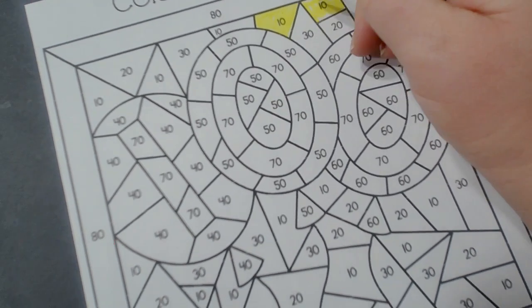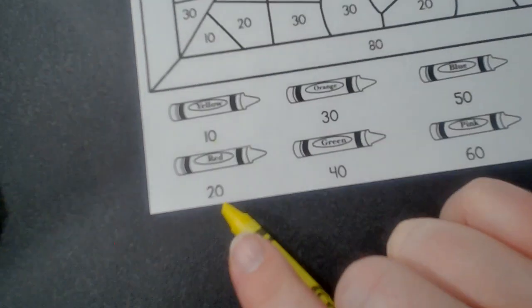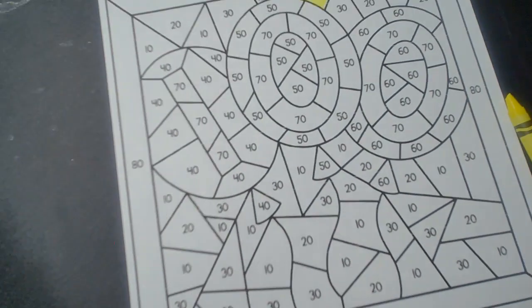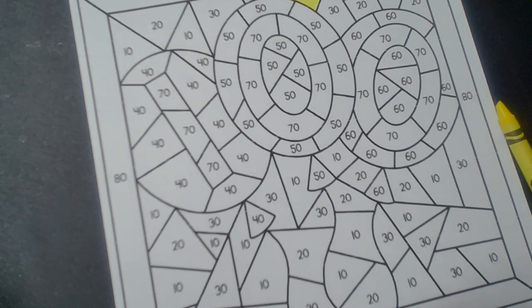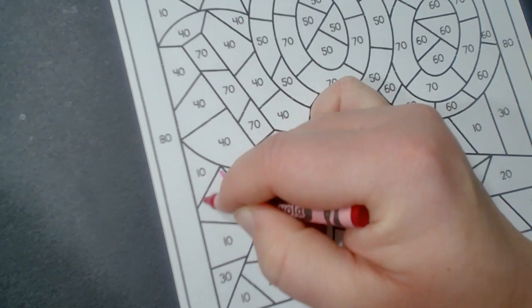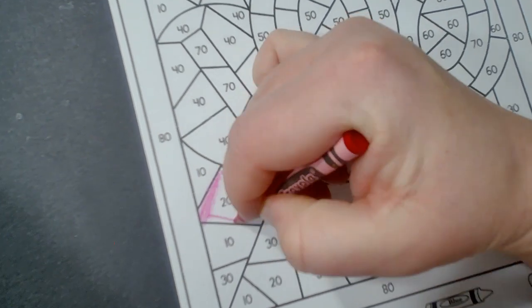Then we're going to color in the 20s. Twenty is going to be red. We're going to find a 20. Right here, we're going to color in the 20 with red.